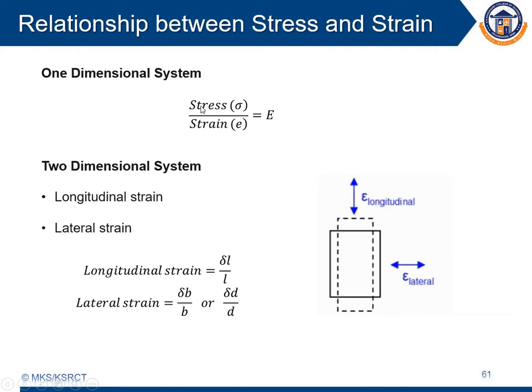For a one-dimensional system, stress by strain is equal to Young's modulus. Usually the components we use in real-time life applications are three-dimensional. In case of a two-dimensional object, there are two different sorts of strains we can calculate: one is the longitudinal strain and the next one is the lateral strain.